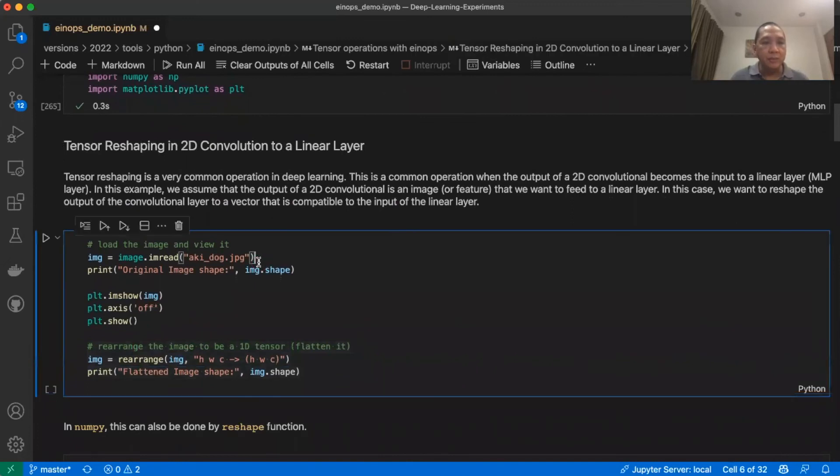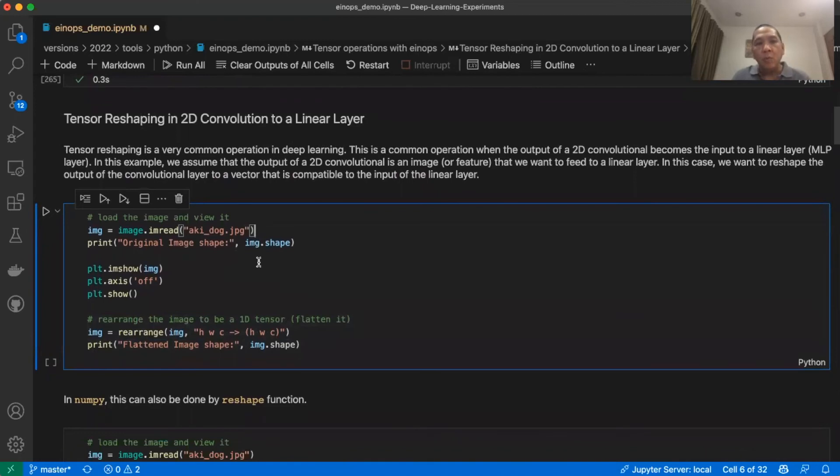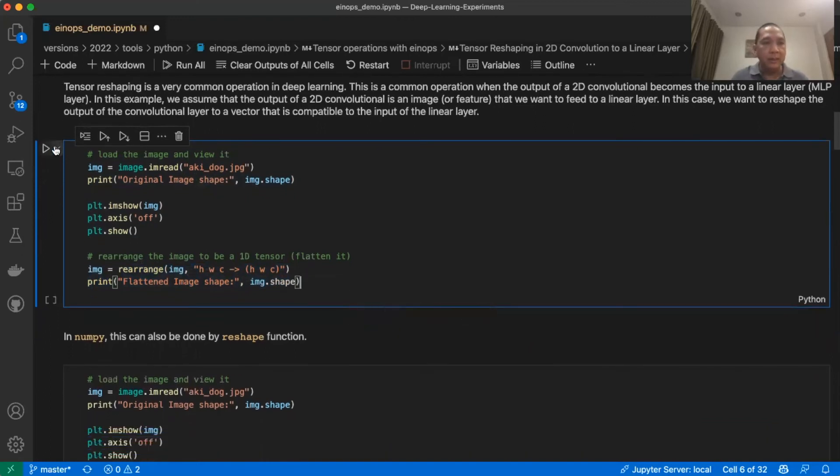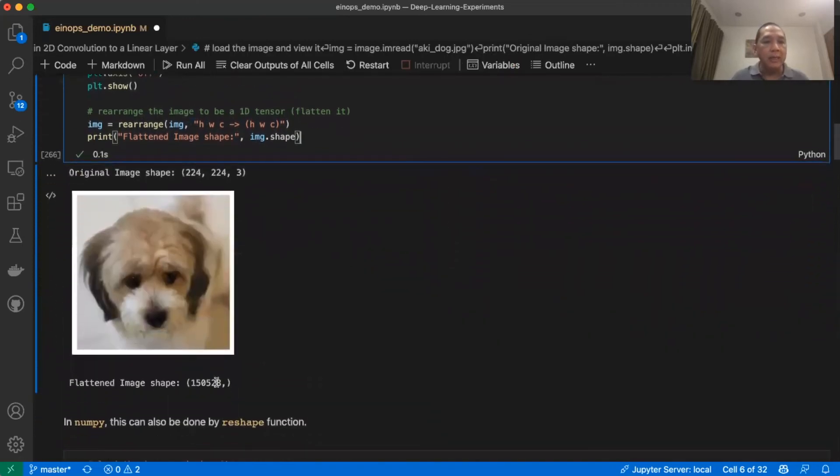The first exercise that we will do is tensor reshaping. In this case, we will reshape an image tensor into 1D. The first thing that we will do is to read the image from the file system. In this case, it's actually an image of a dog. And then after that, we will reshape using rearrange. The reshape target shape is actually 1D. Let's run this code. That is the dog and the resulting image shape.